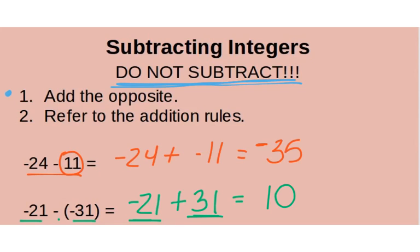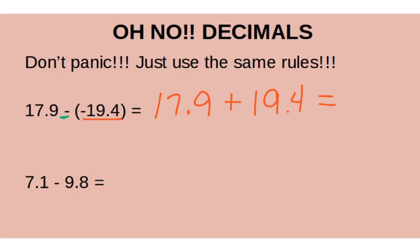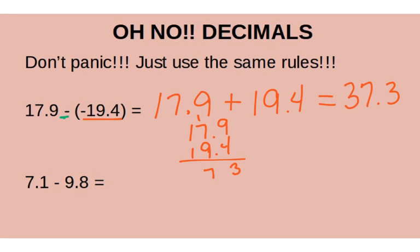What do we do when there are decimals? We do the very same thing. So let's change this: it's a minus, and I don't want to subtract, so we change it to 17.9 plus positive 19.4 — adding the opposite. Both are positive, so I just add them together, and that's 37.3. Remember, line the decimals up when adding and drop the decimal point straight down.